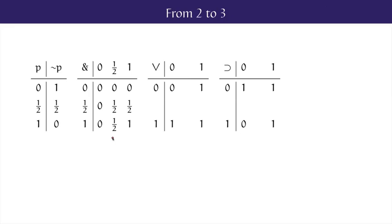Disjunction is similar. Anything disjoined with a true thing is true. Anything disjoined with a false thing has the same value as that other disjunct. And a half disjoined with a half is a half.